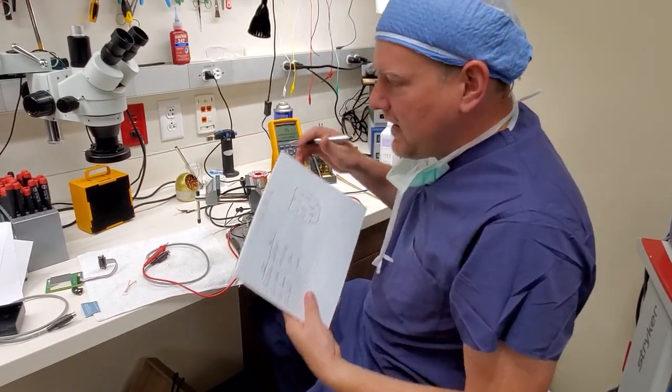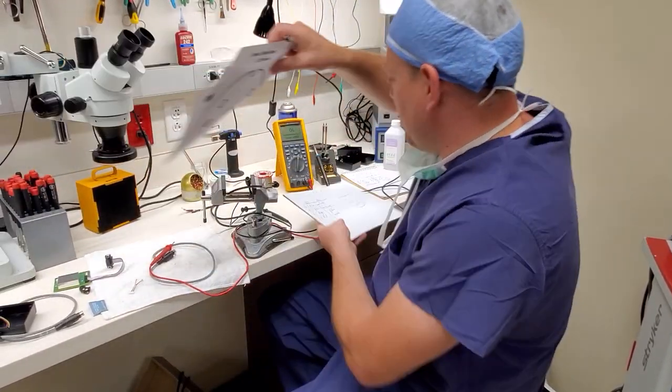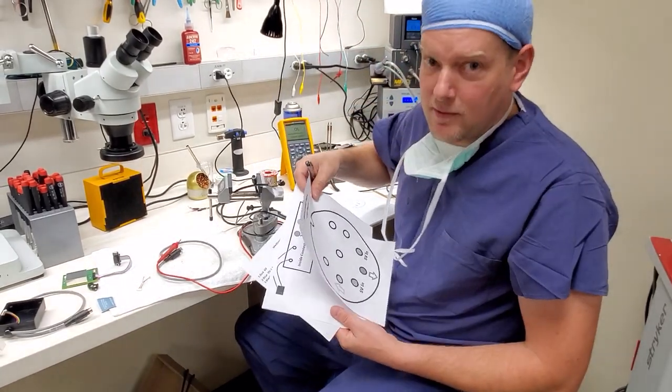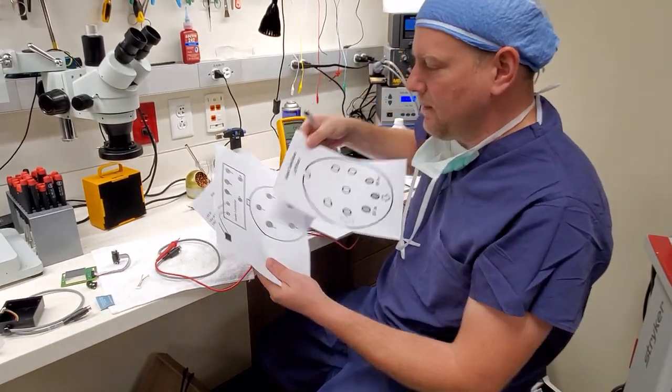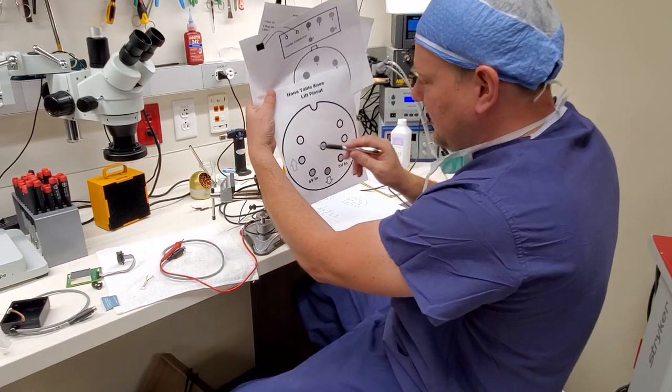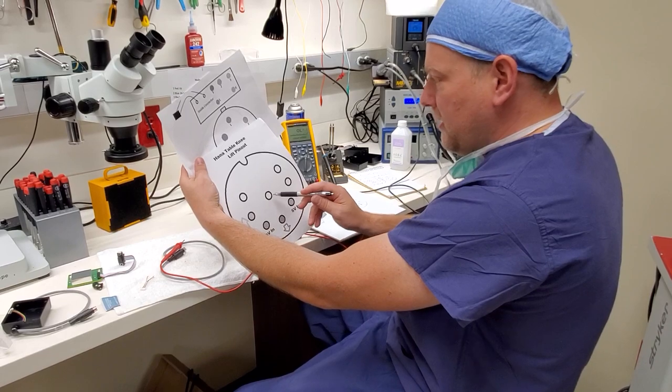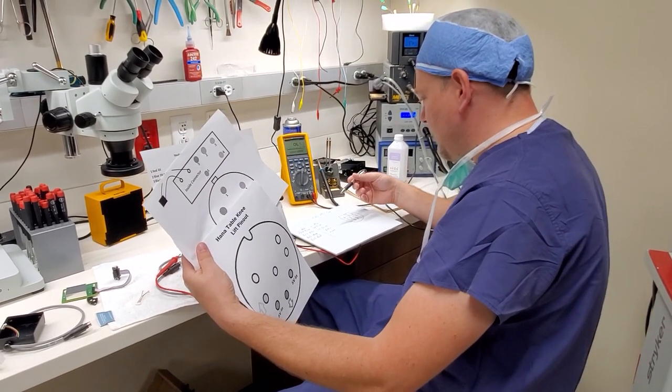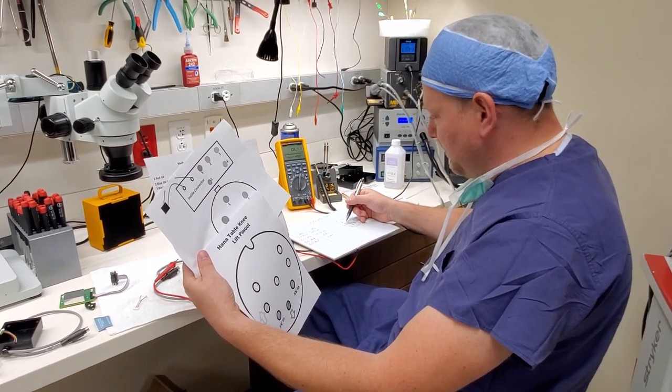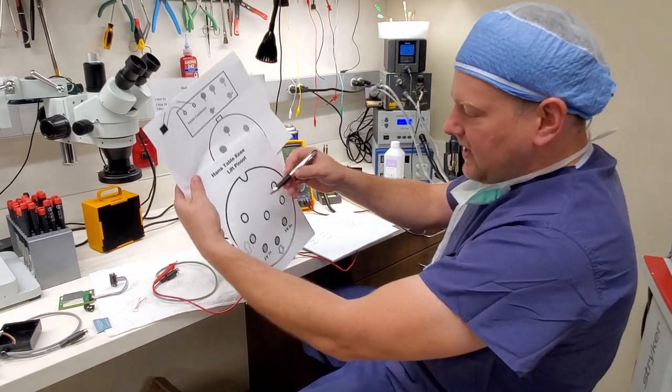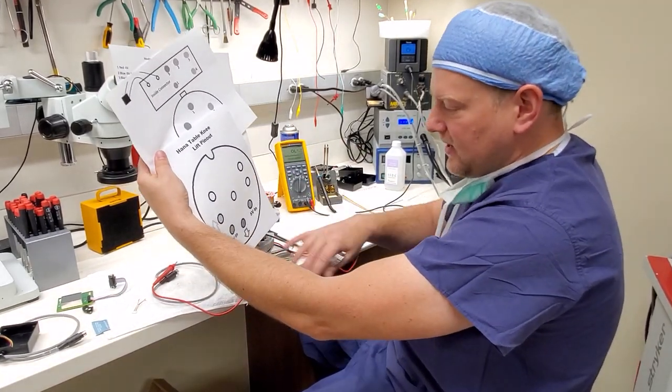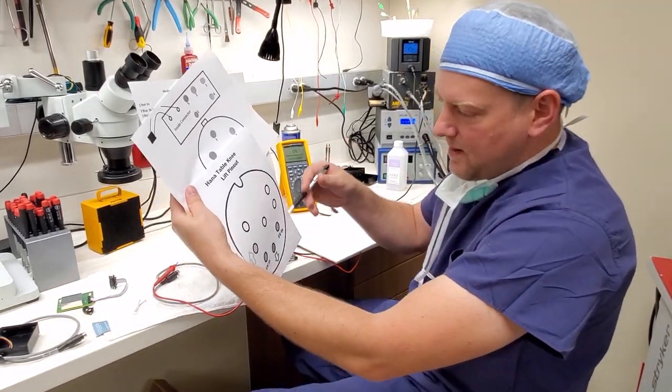So now that I've got the pin out, what I do is I will create in Microsoft Paint, believe it or not people still use that program, I will go ahead and coordinate to the connector that pin 4, pin 5, if pin 4 is blue, then I'm going to put blue, and then I'll have another connector right next to it that says the new connector, and I'll say what that pin correlates to.